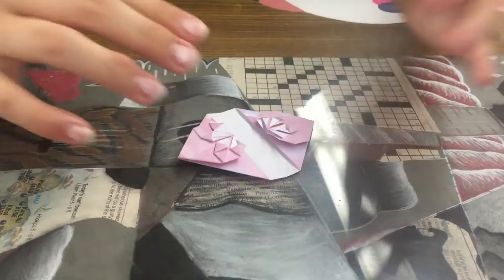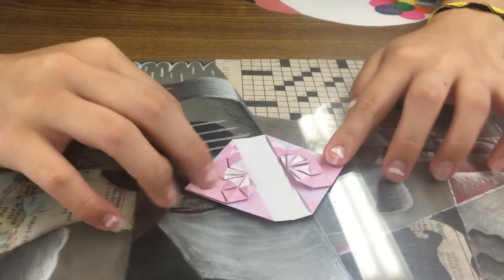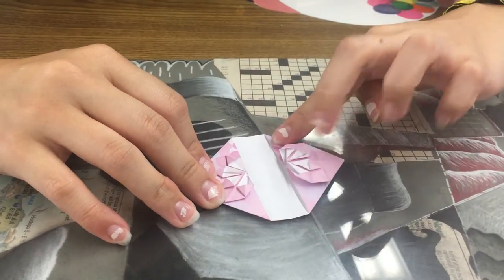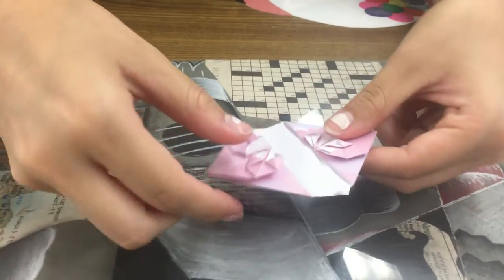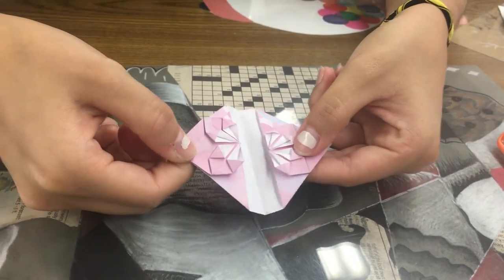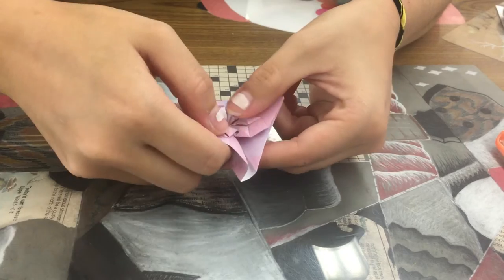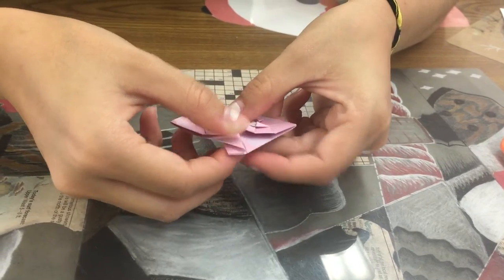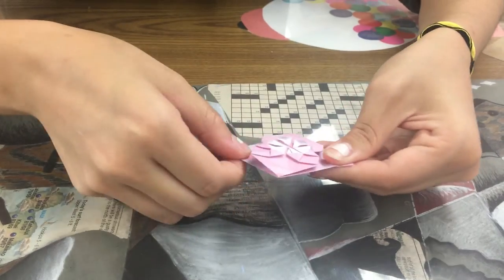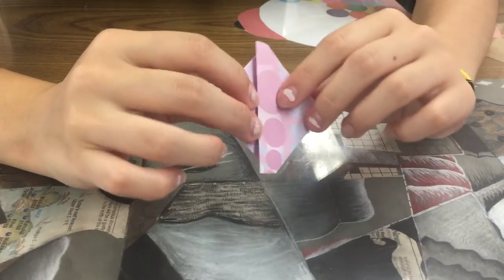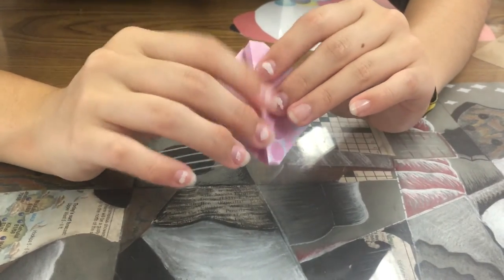And there you are, almost done. So next we want to bring this edge and this edge together. So what we're going to do is we're going to simply just fold it together. The back is going to end up looking like this flat little thing. And that's okay, that's what you want.